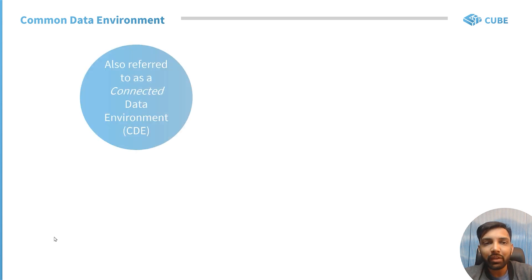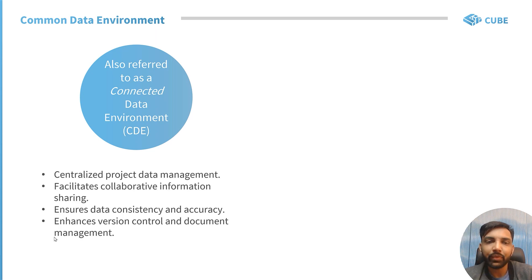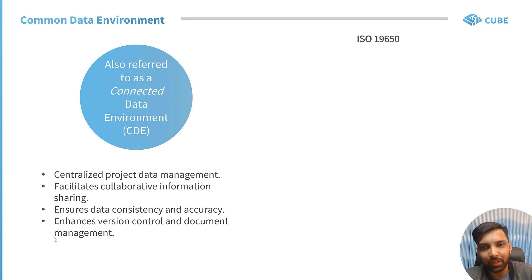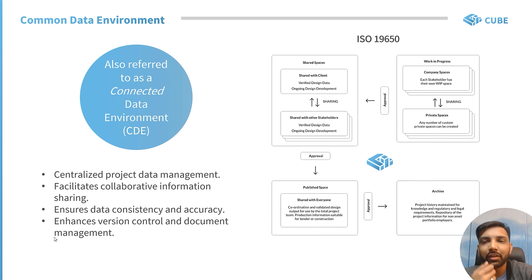Now let's take a look at what a Common Data Environment is. The acronym CDE is popular in the architecture, engineering and construction industry — sometimes the C stands for Connected, or in common parallel it's called a Common Data Environment. The idea is to have all the information in one single place to create a single source of truth for the entire project and to ensure consistency of data throughout the project life cycle. There is a popular standard in the industry, ISO 9650, which talks about best practices for CDEs and how documents or files should move from one shared space to another and finally to published space and to the archive, as illustrated in this diagram. So it introduces the concepts of spaces and information flow.